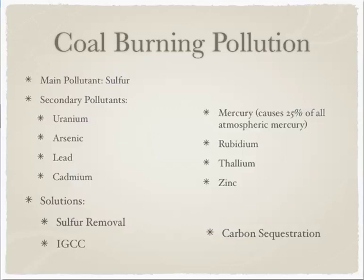Not only does coal harvesting cause issues, but coal burning is also a source of pollution. The main pollutant from coal burning is sulfur oxides. Secondary pollutants include radioactivity and toxic heavy chemicals — uranium, arsenic, lead, cadmium, mercury, rubidium, thallium, and zinc. In fact, 25% of all atmospheric mercury is a contribution of coal burning.